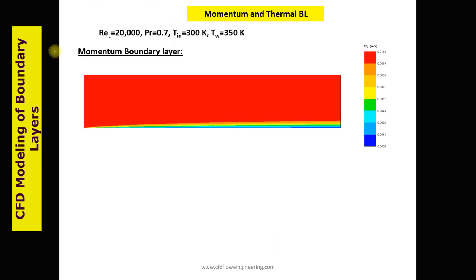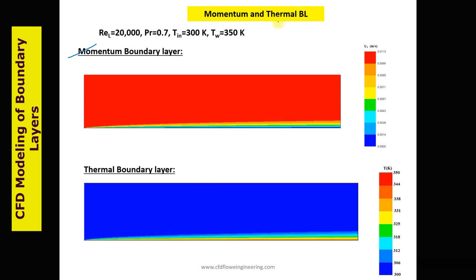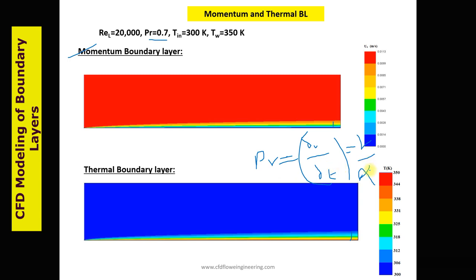Here we see the momentum boundary layer and thermal boundary layer. For Prandtl number greater than 0.7, which means it is around 1, the thickness of the thermal boundary layer is high compared to the thickness of the momentum boundary layer. Because the Prandtl number is equal to the thickness of the velocity boundary layer divided by the thermal boundary layer. That means thermal diffusivity is high in this case, and we can see a slight difference between the thermal boundary layer and the momentum boundary layer.